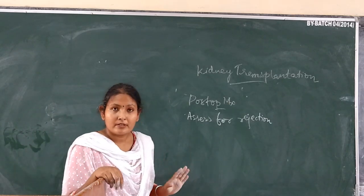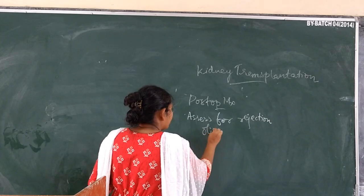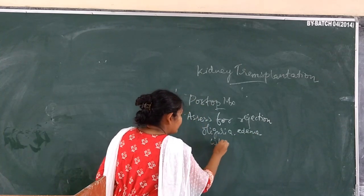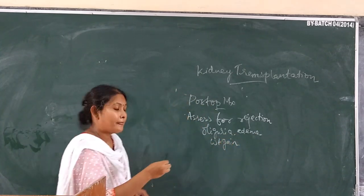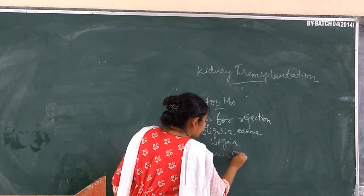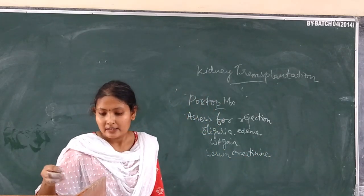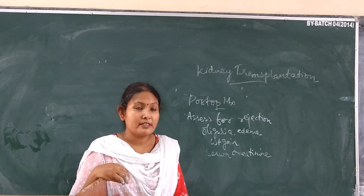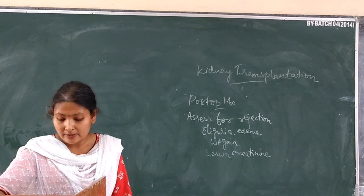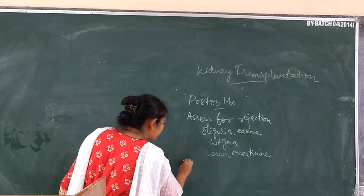Signs of transplant rejection include reduced urine output, pain over the transplanted kidney, and a rise in serum creatinine. A rise in serum creatinine indicates kidney injury and signals that the kidney is moving toward failure.